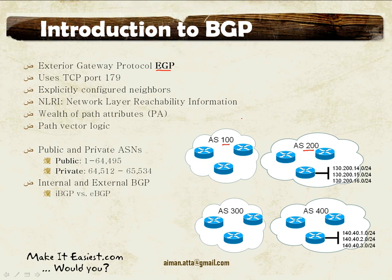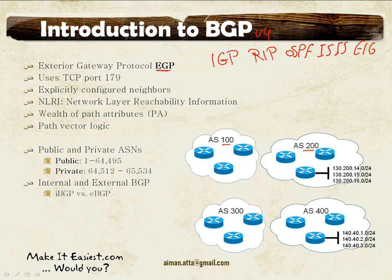ISPs today are using BGP version 4 to exchange routing updates over the internet. EGP, exterior gateway protocol, is different from IGP, interior gateway protocol, which includes RIP, OSPF, ISIS, and EIGRP. All these are interior gateway routing protocols. You would never use an IGP to exchange routing updates over the internet between autonomous systems, because we're talking about a lot of routing information and prefixes over the internet.